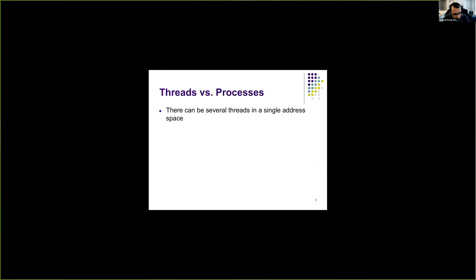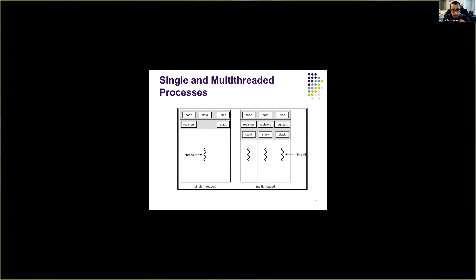In the previous week we looked at threads and how each process can have several threads, and all threads share the same address space. We saw that the execution state is the only thing that is different among each thread in a multi-threaded application. The address space, which includes code, data, and all the resources, stays the same for all threads. We saw how we can split the execution state from the process control block to get a nice abstraction of threads.